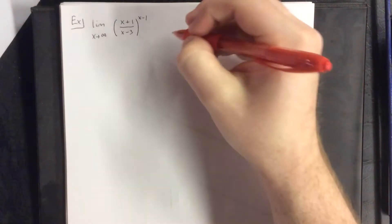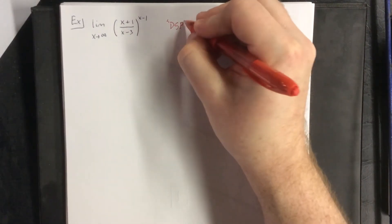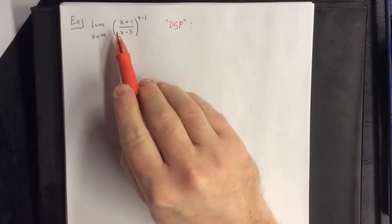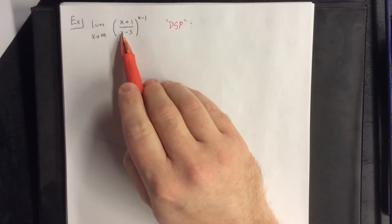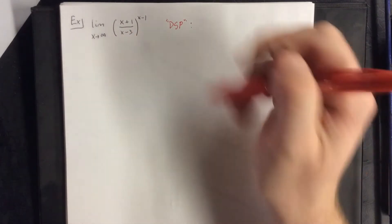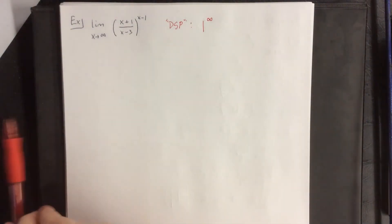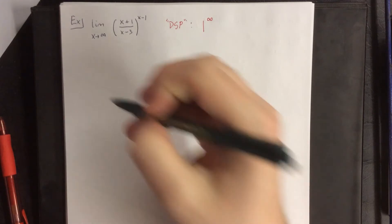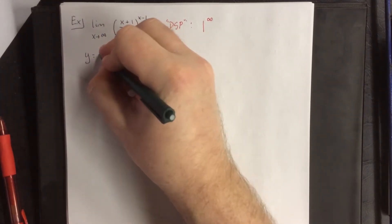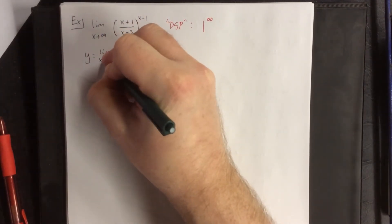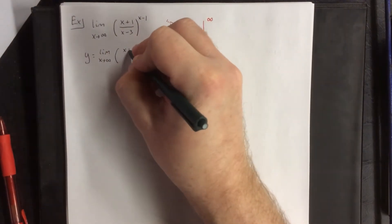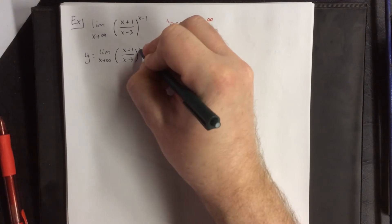For another example, we're going to take the limit as x goes to infinity of x plus 1 over x minus 3 raised to the x minus 1 power. As x goes to infinity, the quantity inside becomes infinity over infinity, and one application of L'Hôpital's rule gives 1 over 1, which is 1. The exponent goes to infinity, giving us 1 raised to the infinity power — an indeterminate form. We assume the limit exists and call it y.